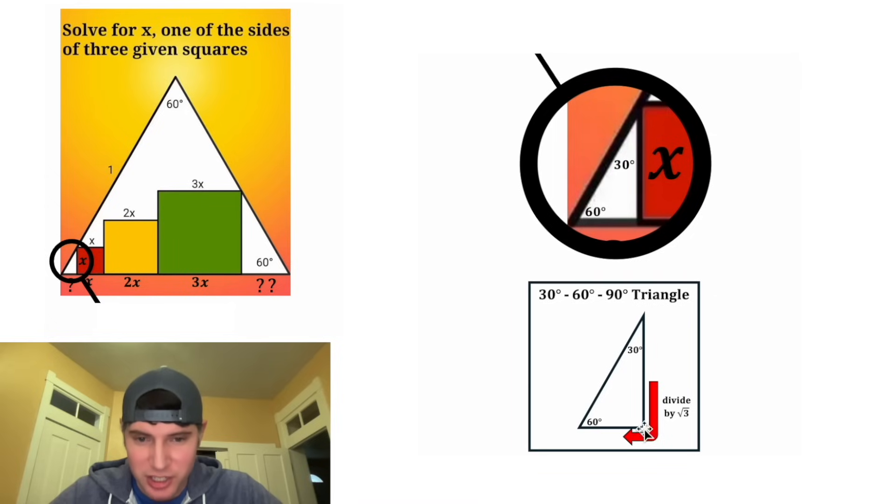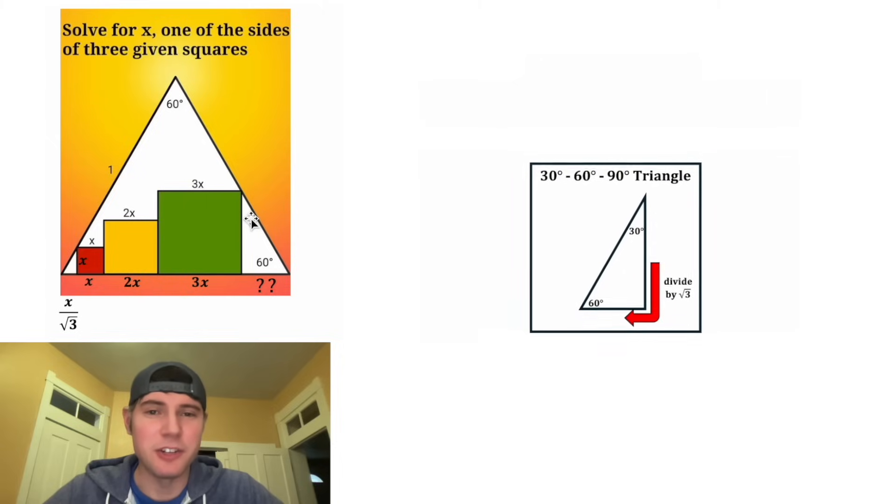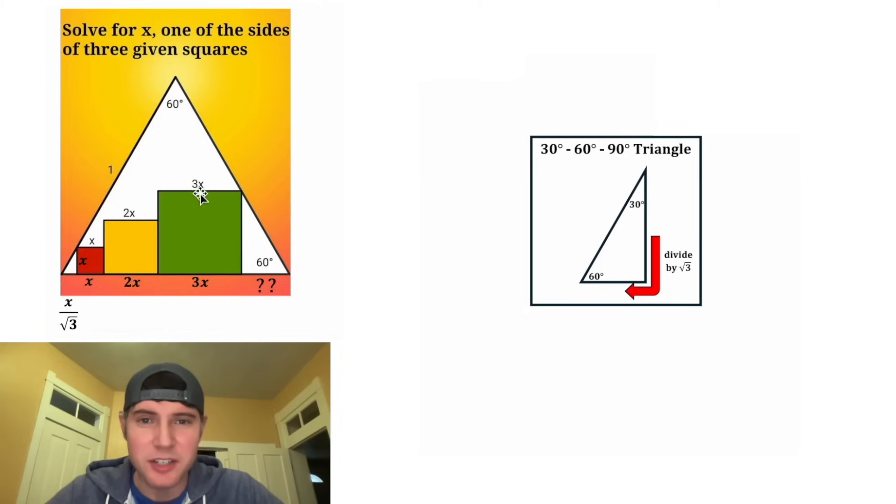This triangle is oriented just like the one in our notes. So this side being X, we can make this X. And if we divide X by root 3, that'll give us X over root 3. So that means this bottom piece is equal to X over root 3. And we can update this question mark to be X over root 3. And now we just got to find this double question mark. And this is also going to be a 30-60-90 triangle where this side opposite the 60 is equal to 3X.